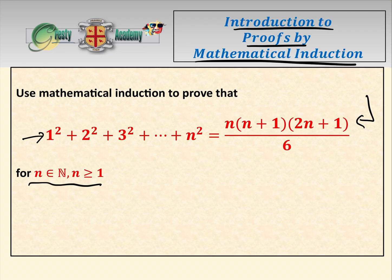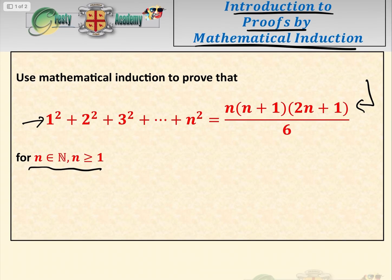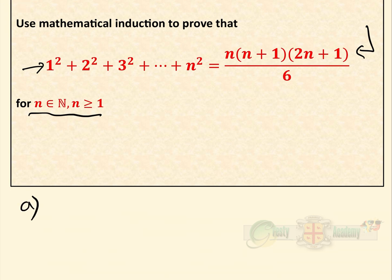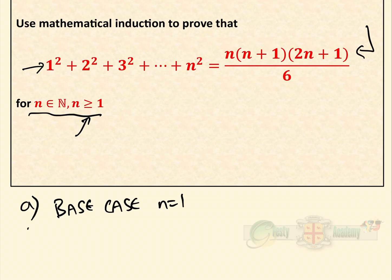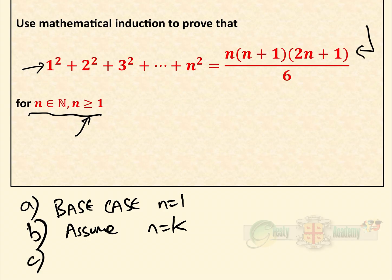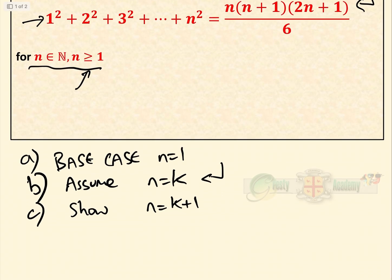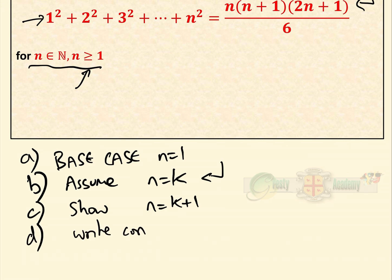There are basically four parts to mathematical induction proofs and they're all the same. First, we show the formula is correct for our base case — i.e., we show it's correct for n equals 1. Next, we assume the formula is true for n equals k. Then we show that, assuming it's true for n equals k, it's also true for n equals k plus 1. Finally, we write our conclusion, which is really important because if you don't write it, you lose a mark automatically.